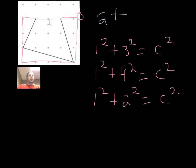Okay, when you look at this now, here are the three triangles that we have. We have 1 squared plus 3 squared equals c squared - that is this triangle right here. We have 1 squared plus 4 squared equals c squared - that is the bottom triangle right here. And then we have 1 squared plus 2 squared - that is the triangle on the left.